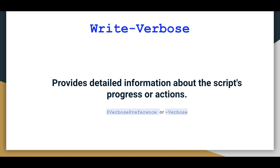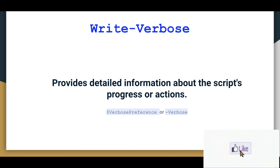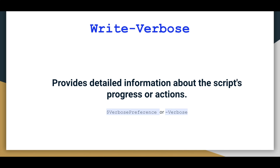There is also Write-Verbose, which provides detailed information about the script's progress or actions. If you want to display a lot of information as you progress through a script, you can use Write-Verbose. To activate it and display the verbose information, you either enable it at the beginning or you append '-Verbose' to the end of the command line — that way you will see detailed verbose information.